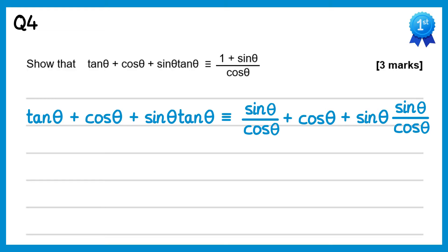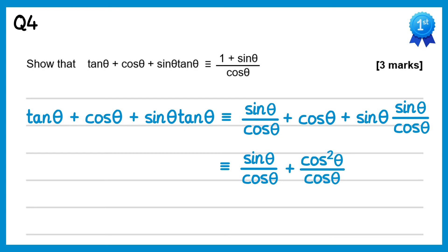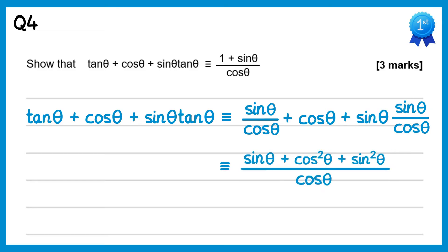Next we're going to write all of these terms over cosθ. The first one is already over cosθ. The second one we multiply and divide by cosθ, giving cos²θ over cosθ. And the final one gives sin²θ over cosθ. Writing these as one fraction, we have sinθ plus cos²θ + sin²θ over cosθ — and since cos²θ + sin²θ = 1, we get sinθ + 1 over cosθ, which we can rearrange to 1 + sinθ over cosθ, exactly what we wanted to show.